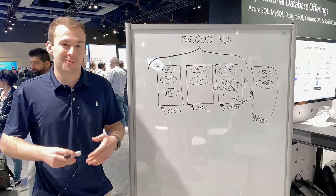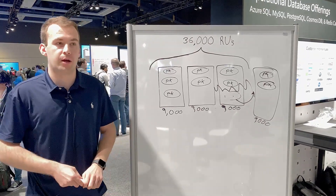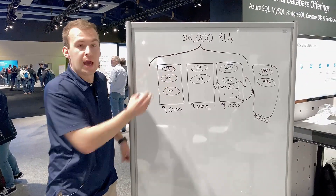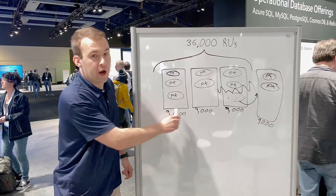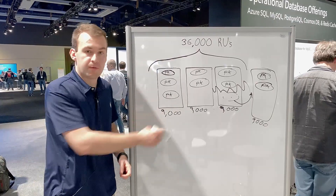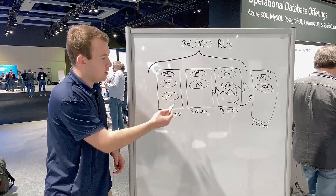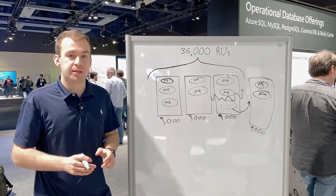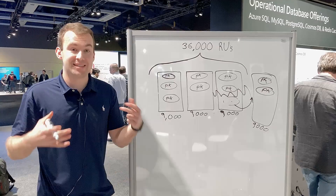The next thing I want to shift to is what you as the developer using Cosmos DB need to know and control. You as a developer are going to specify a value called PK — my abbreviation for partition key. Your partition key is going to dictate where your data is stored among each of these physical partitions. Each physical partition has a subset of the resources and also a subset of the data. The data on one physical partition does not overlap at all with data on another. Cosmos DB will store one or more partition keys on the same physical partition.